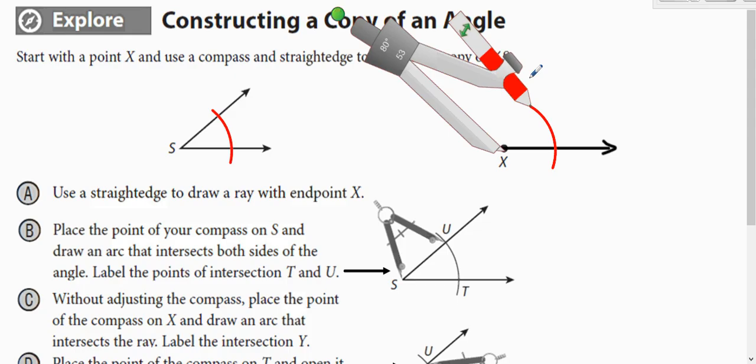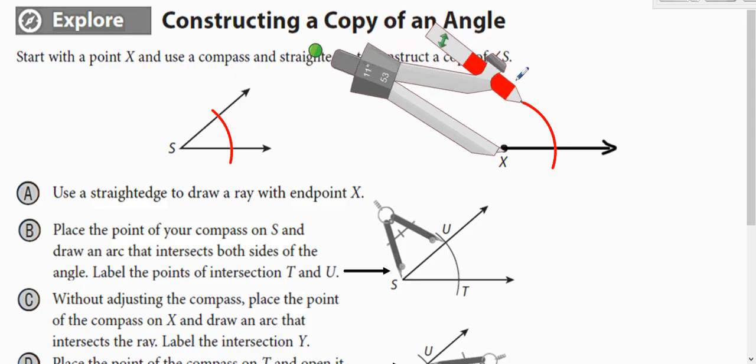Now without messing up your compass, without adjusting it, bring it over to the endpoint where we're copying the angle to, and we're going to make a very similar arc.